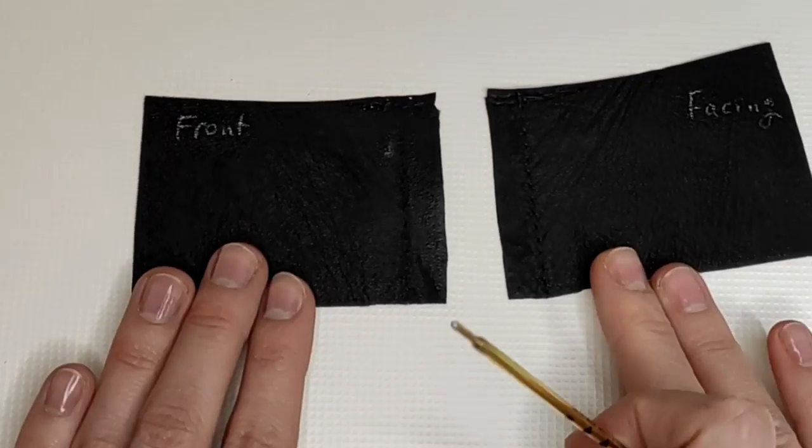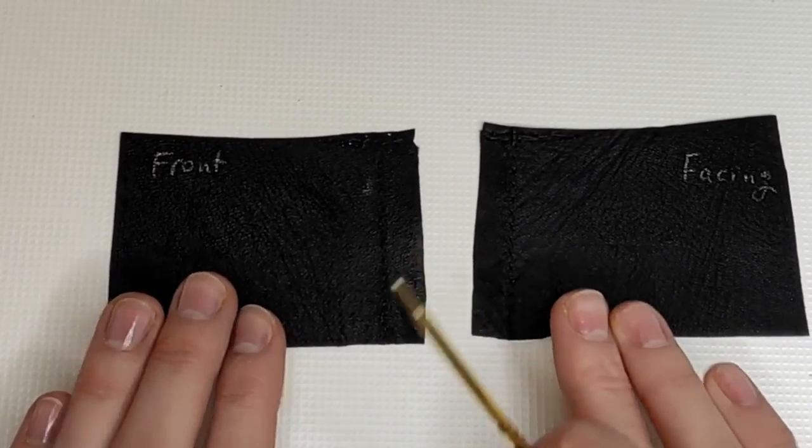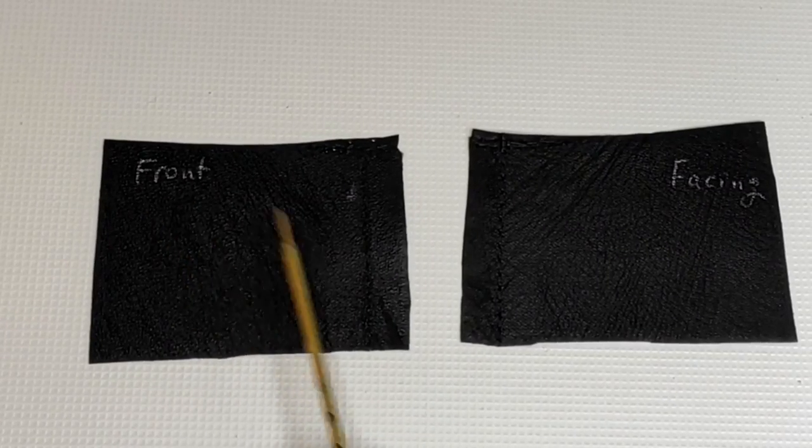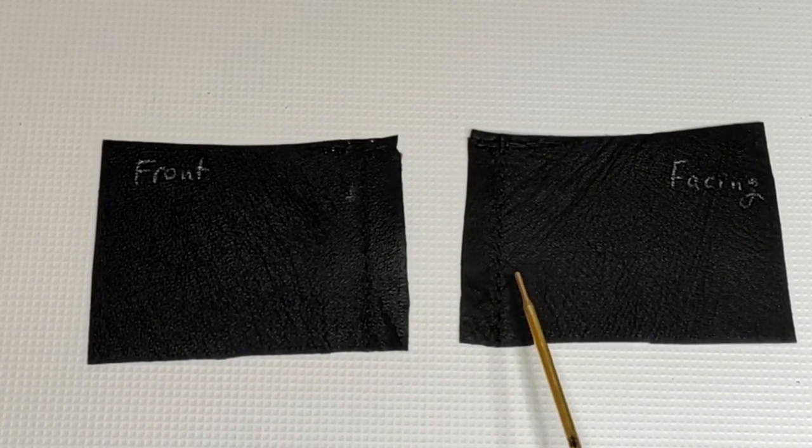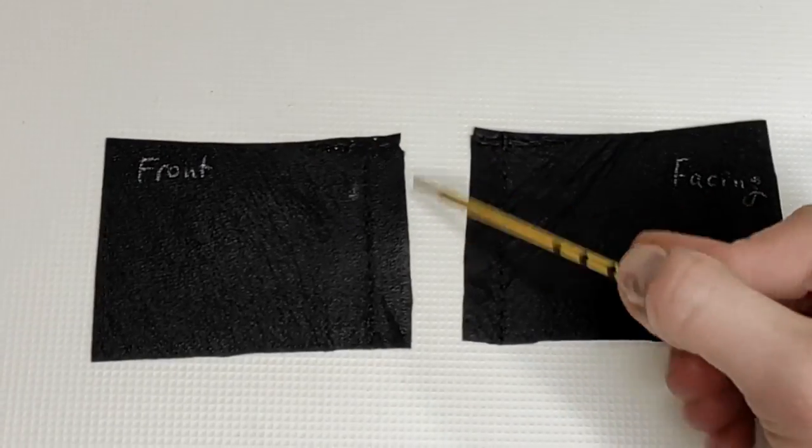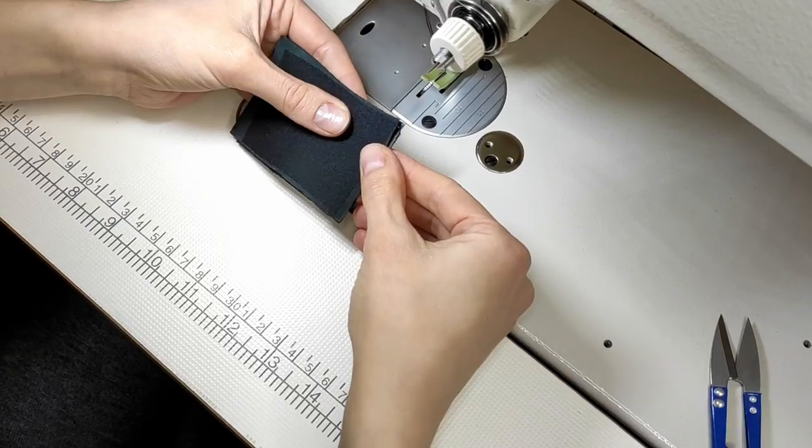In the next step, I'm joining two pieces of leather, so one imitates the front of the garment, the basic fabric, and the other one is going to imitate the facing of our garment.